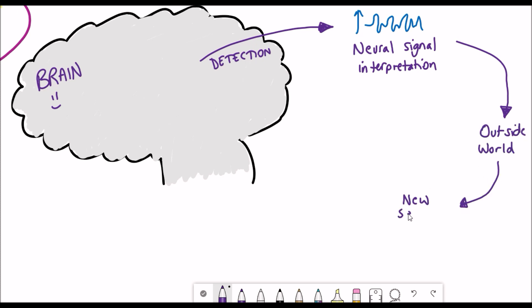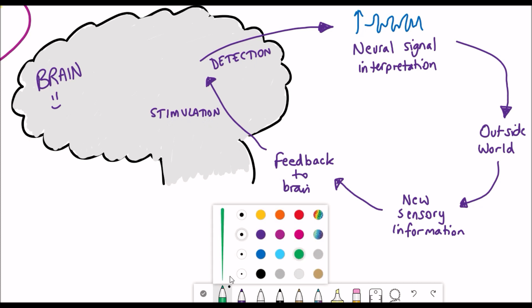Then you need to be able to interpret these signals and understand what it means and then using that information you can then feed back into the brain and stimulate different neurons. This could work either by taking the information to the outside world or by having a direct in vivo feedback system. How many neurons would you have to detect to be able to interpret the signal?